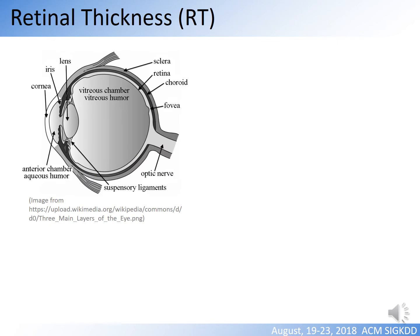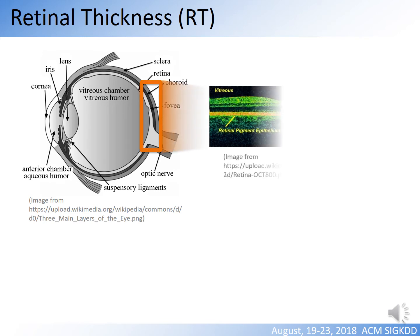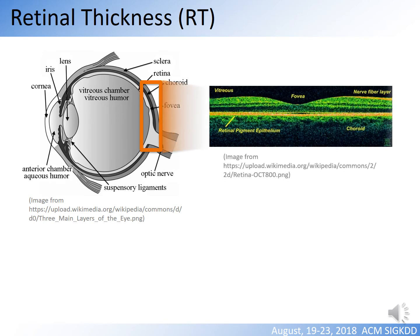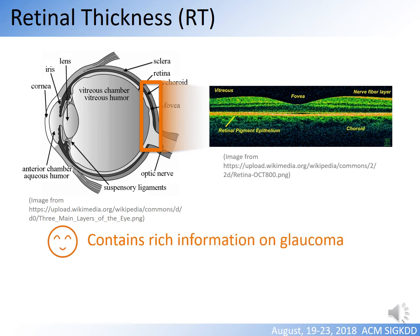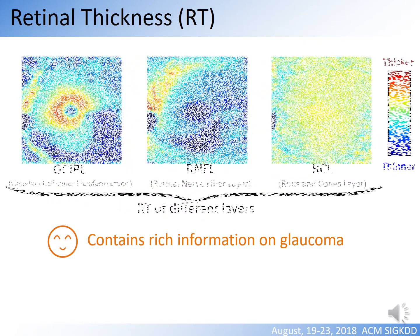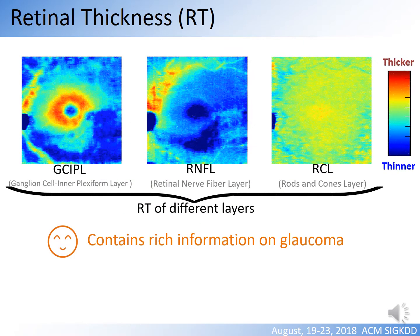Because glaucoma causes thinning of retinal layers at the same time as it brings about visual dysfunction, retinal thickness, or RT for short, brings us rich information about the disease. With optical coherence tomography, clinical doctors can measure the thickness of different retinal layers of glaucoma patients.